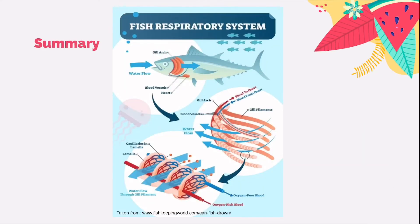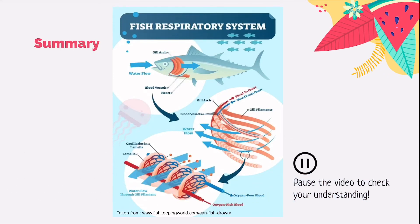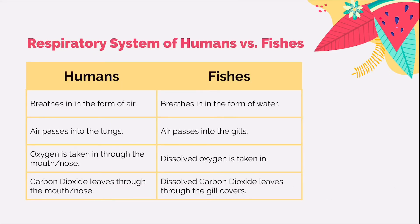Here is a summary of the fish's respiratory system — pause the video to check if you have understood how fishes breathe underwater. Note that the details in this picture are not required in your syllabus. Looking at the differences: humans breathe in air while fishes take in water; air passes into the lungs of humans while water passes into the gills of fishes; oxygen is taken in by humans while dissolved oxygen is taken in by fishes; and carbon dioxide is removed from the human body through the mouth or nose, while in fishes, carbon dioxide leaves through the gill cover.